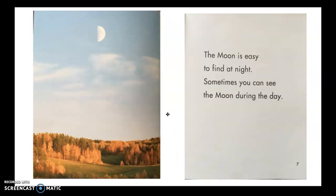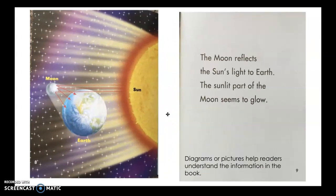The moon is easy to find at night. Sometimes you can see the moon during the day. The moon reflects the sun's light to earth. The sunlit part of the moon seems to glow.